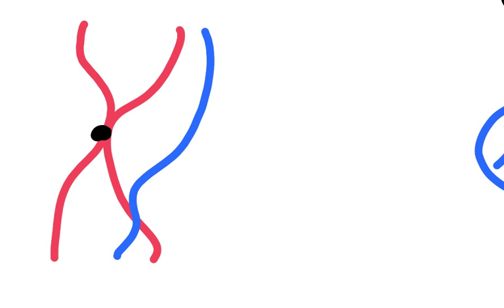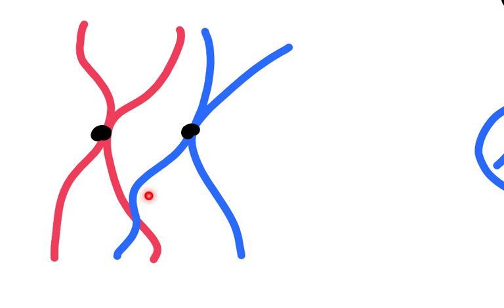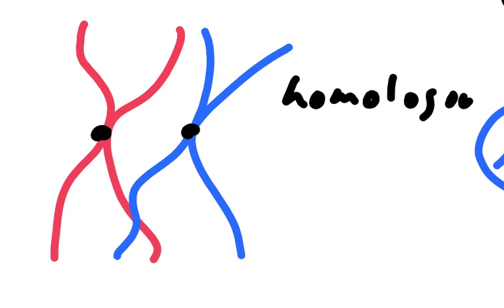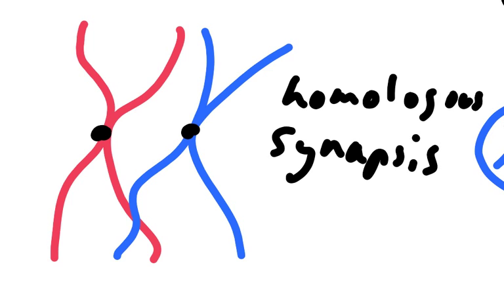Now they will line up. One of these is called a chromatid, and this is a semi-conservatively copied one — it contains one of the old strands and one of the new strands of DNA copied by DNA polymerase. These are a homologous pair of chromosomes — homo meaning same. They've lined up together in a process called synapsis, and a homologous pair is called a bivalent.